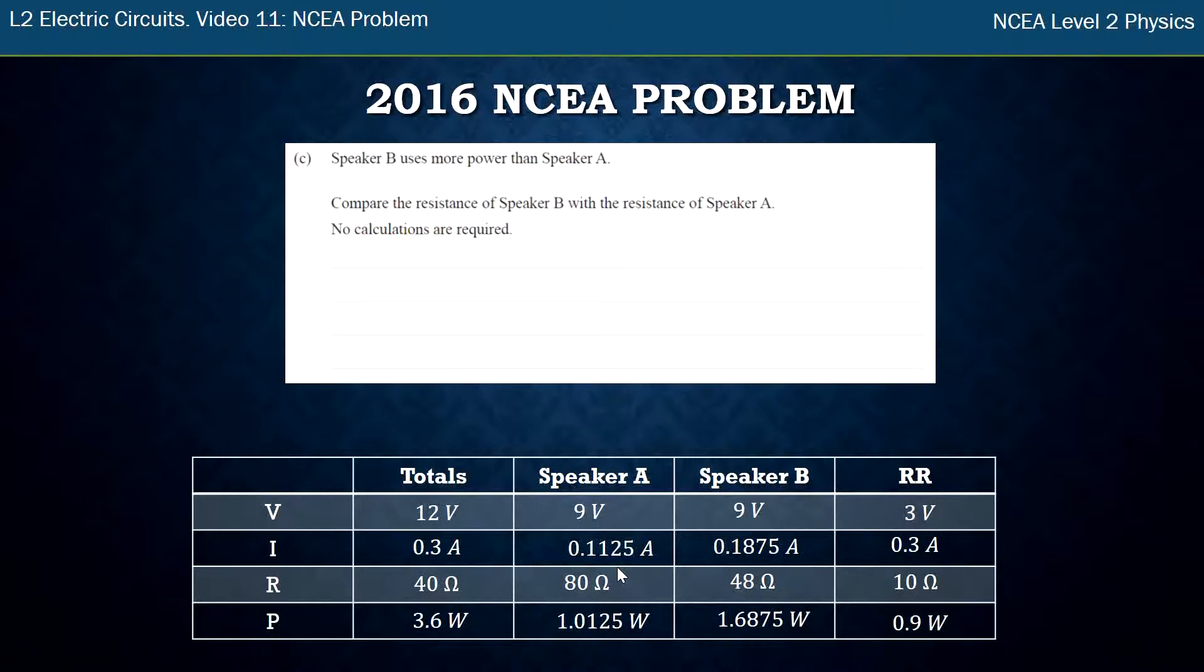And see saying speaker B uses more power than speaker A. I can see that. Yes. Compare the resistance of B with speaker A. So I've got 48 versus 80 so I've just got to write that down. Speaker B has resistance 48 which is less than speaker A with 80 and see working on back page.